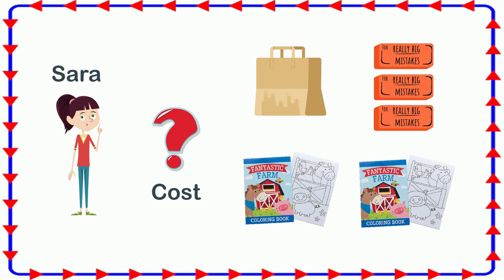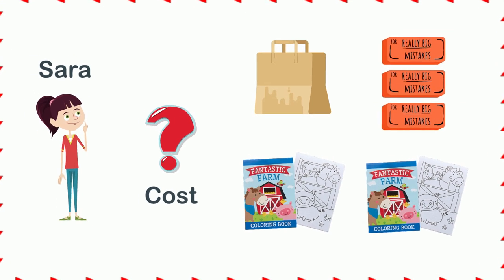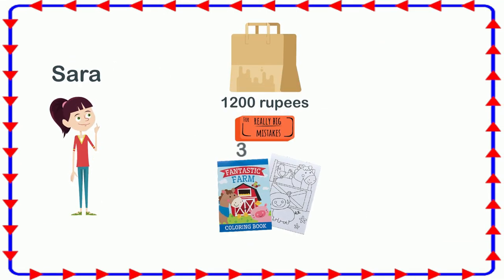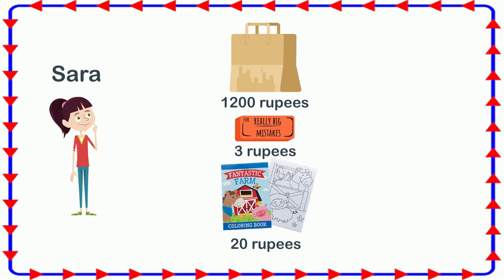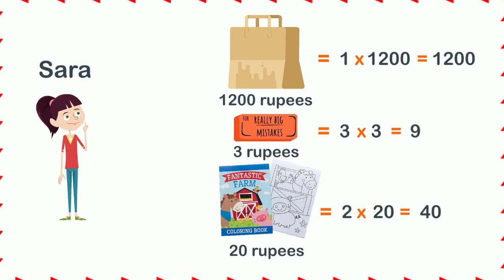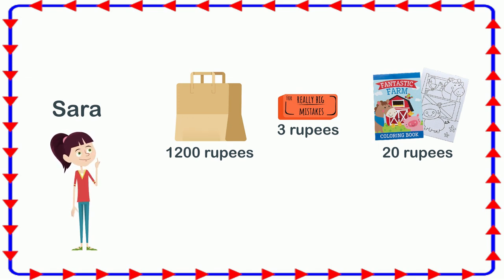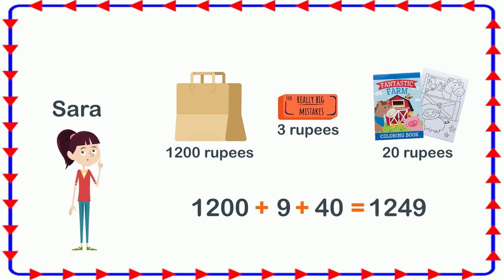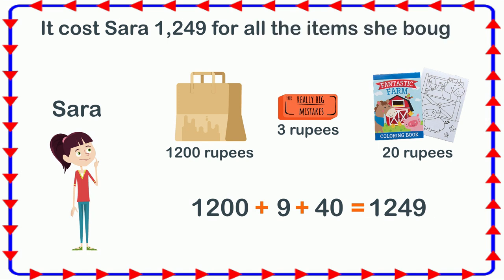We have to add all prices together to get the total cost. First we look at each item's separate price: 1 bag = 1 × 1200 = 1200 rupees; 3 erasers = 3 × 3 = 9 rupees; 2 colouring books = 2 × 20 = 40 rupees. Now let's add them together: 1200 + 9 + 40 = 1249 rupees. Therefore, it costs Sarah 1249 rupees for all the items she bought.